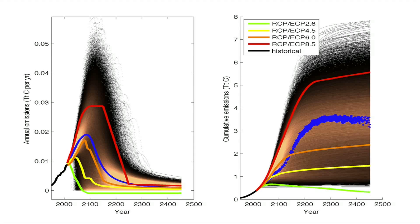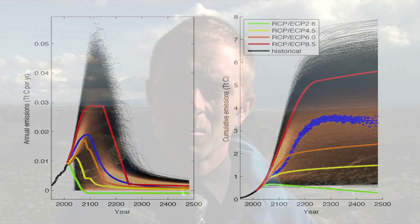Why are probabilistic projections needed? Because climate adaptation and mitigation requires likelihood estimates in order to develop robust planning. For example,